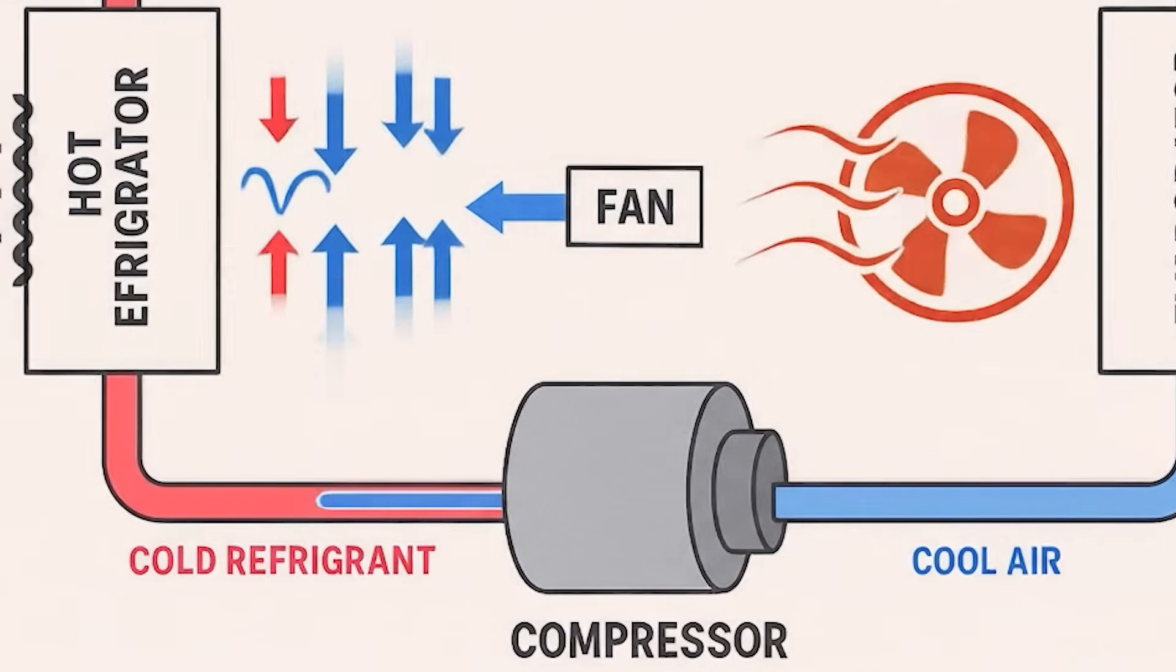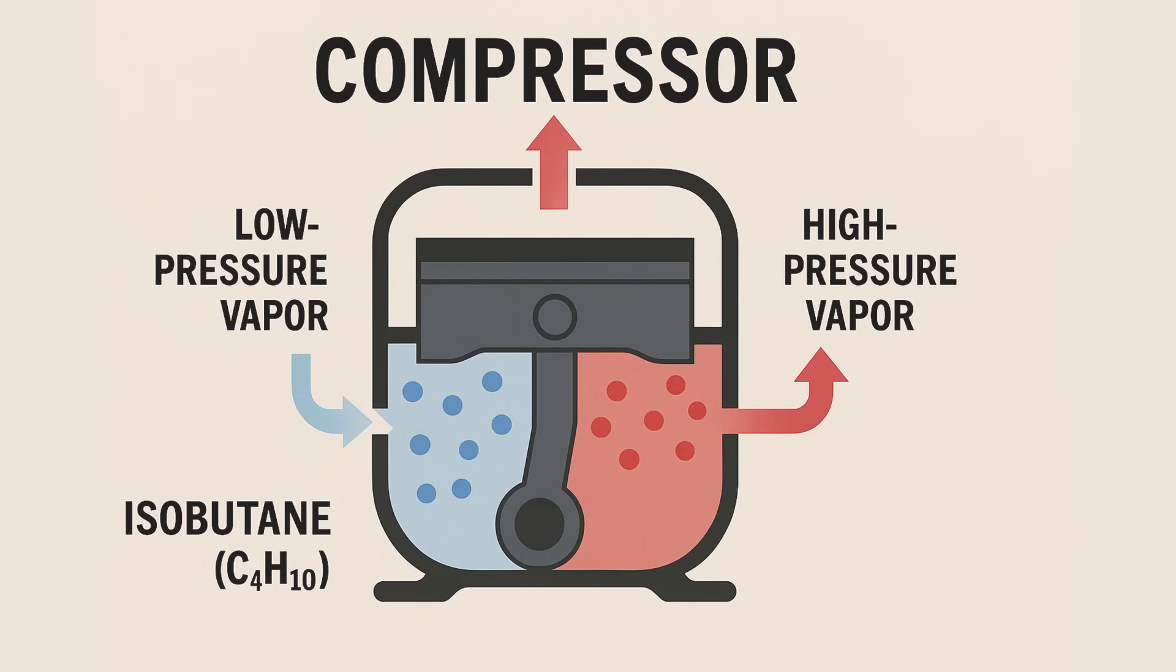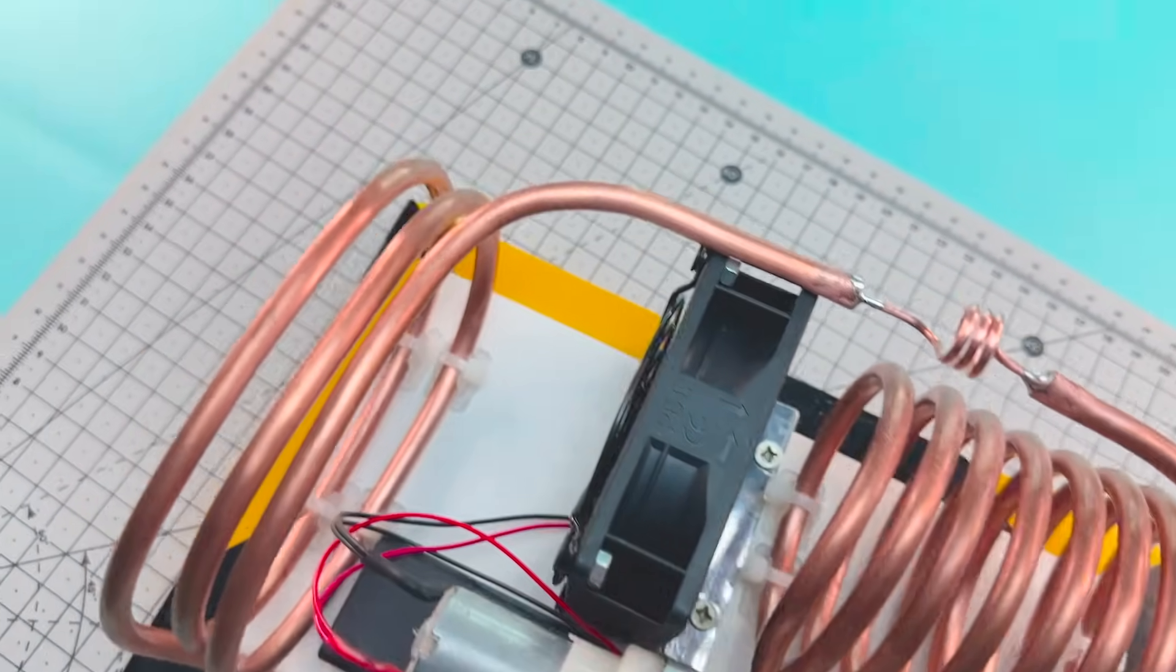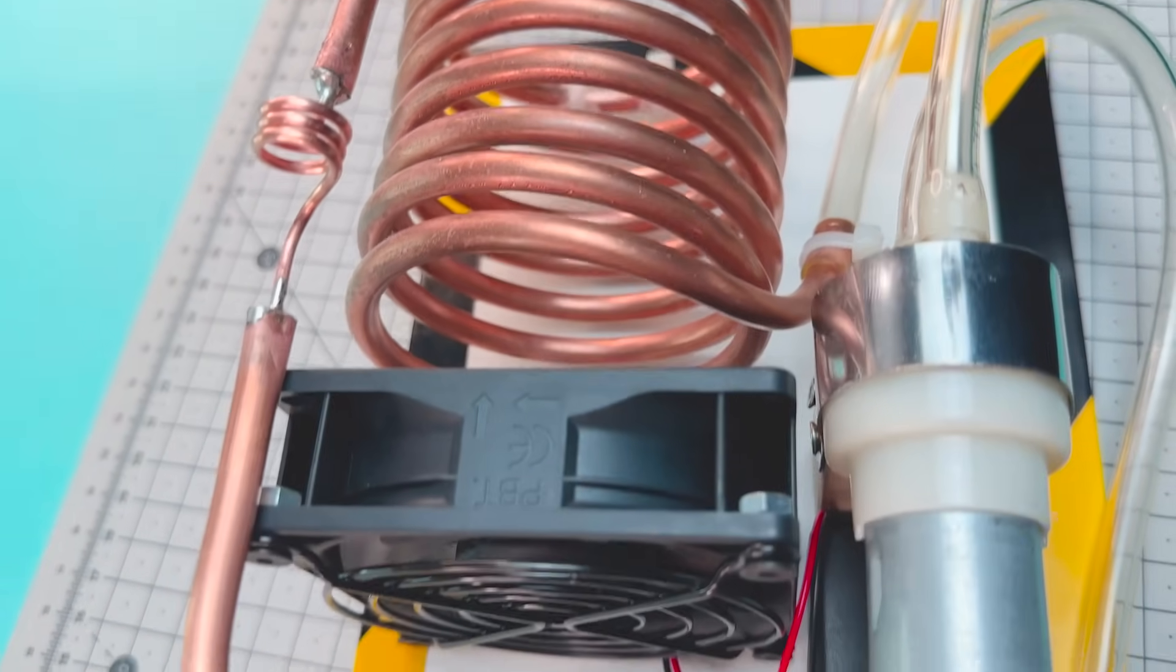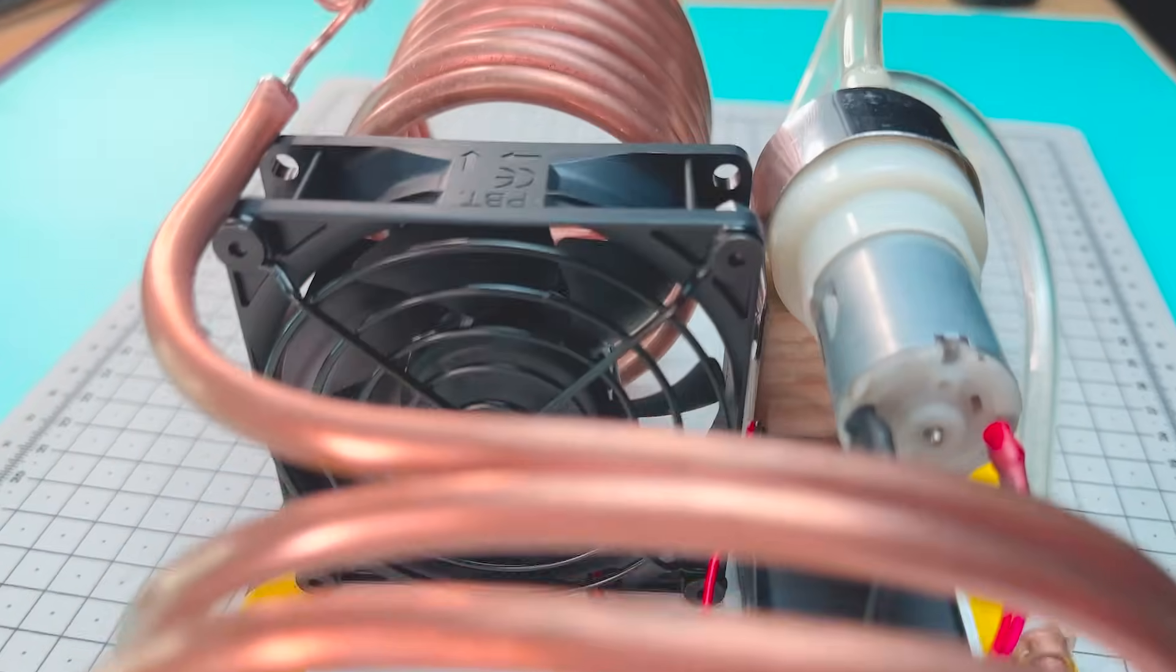That's where the pump comes in, simulating the role of a compressor. It collects the low pressure gas and compresses it, increasing its temperature. Then as it passes through another section of the circuit, the gas releases that heat into the environment and condenses. It becomes liquid again, and the circuit is complete.